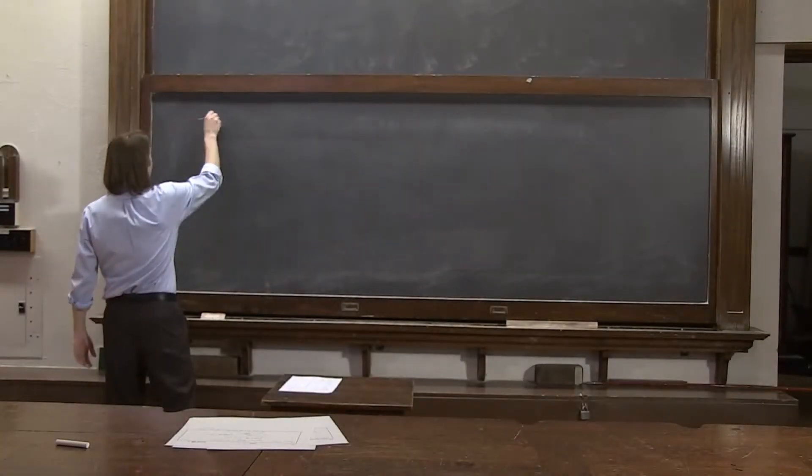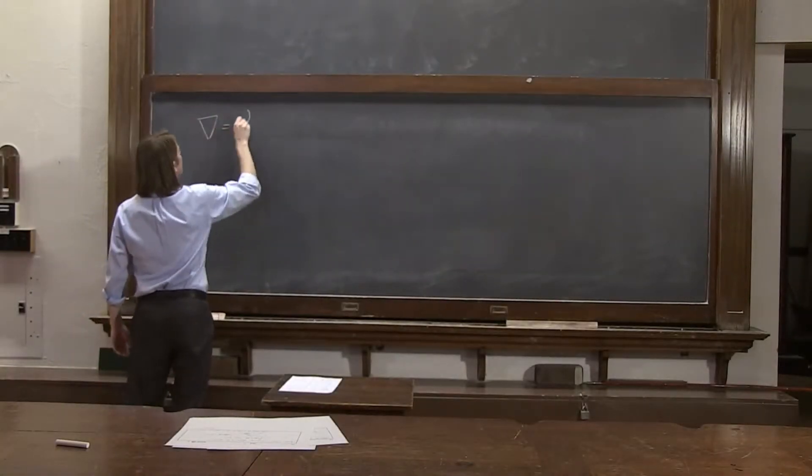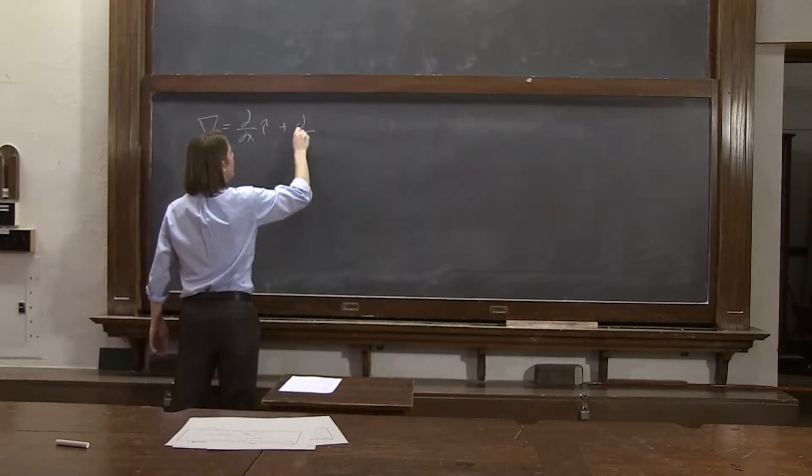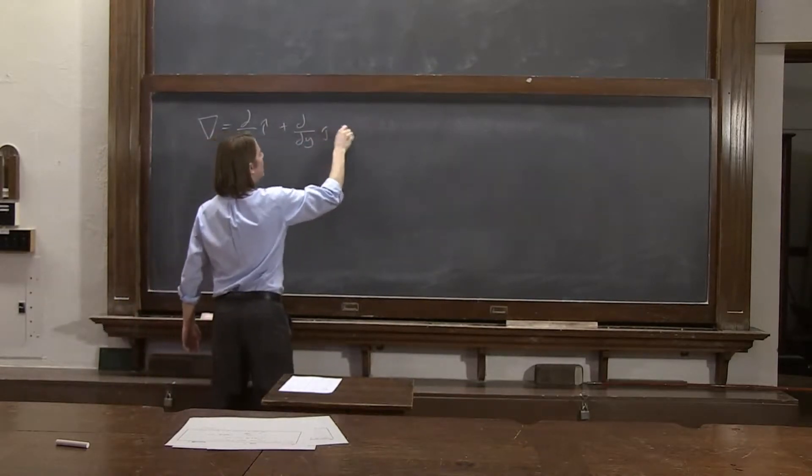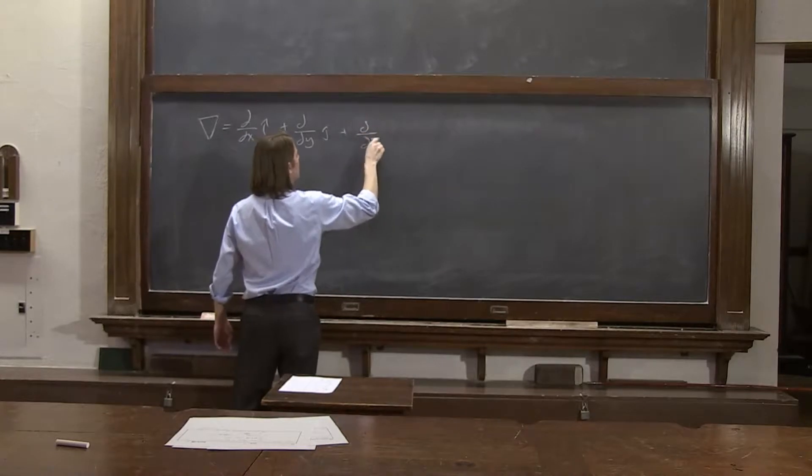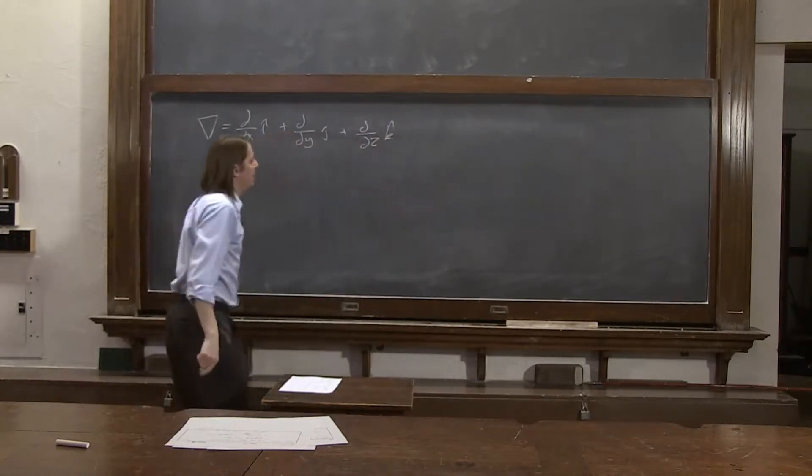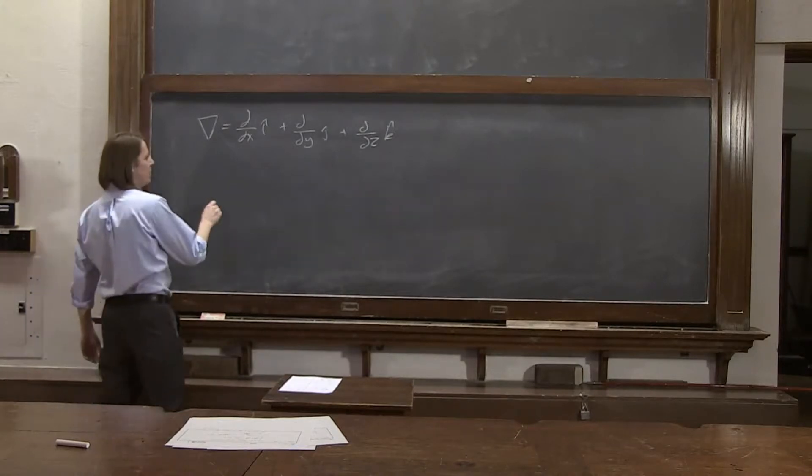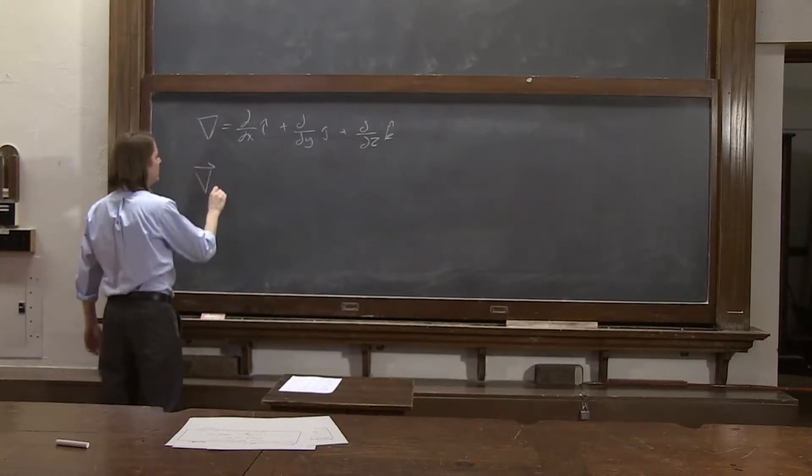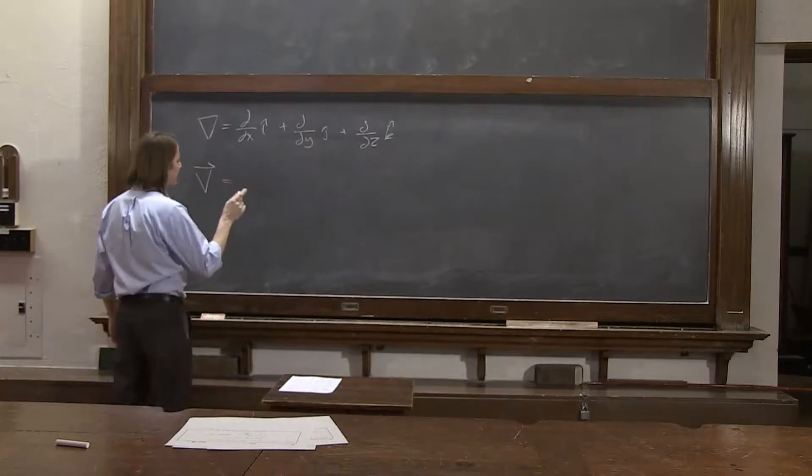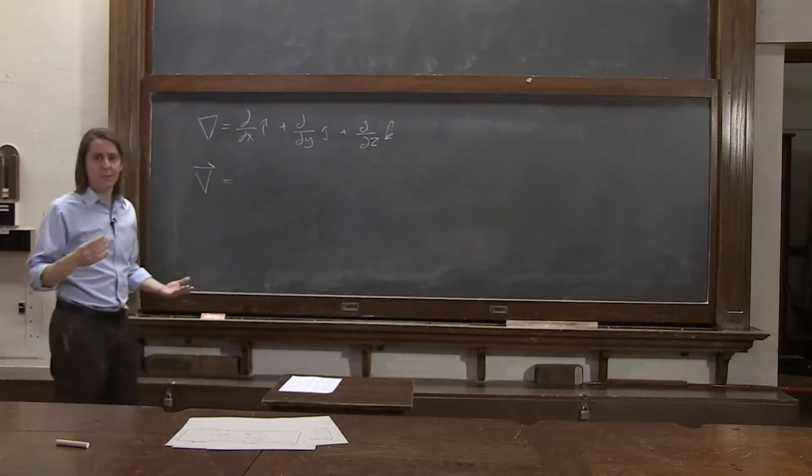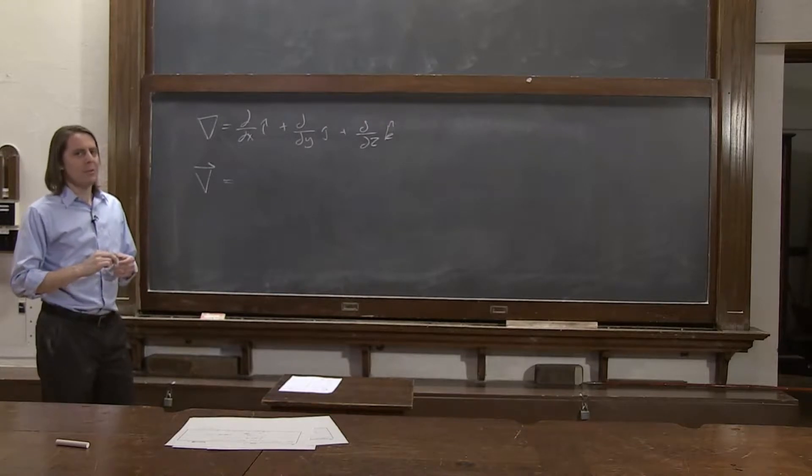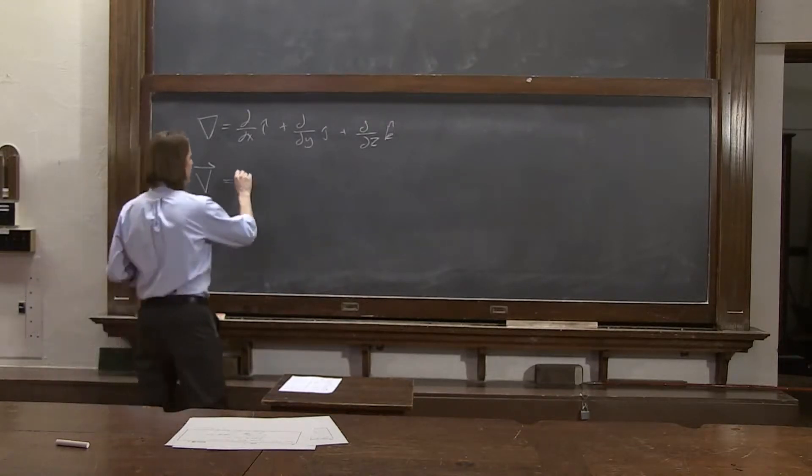We have our way to take derivatives now. Del: d/dx i-hat plus d/dy j-hat plus d/dz k-hat. And we applied it to a scalar field. Now let's apply it to a vector field, which I'll write just big V. And a vector field, we've dealt with many vector fields by now, electric fields and magnetic fields.